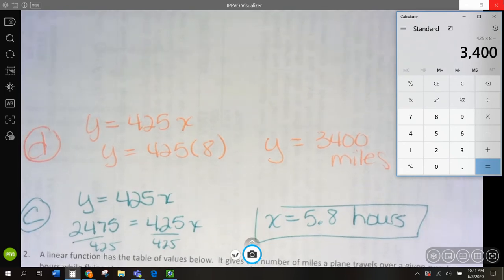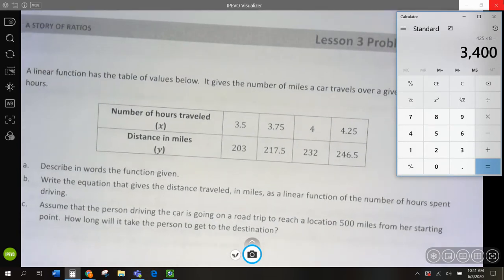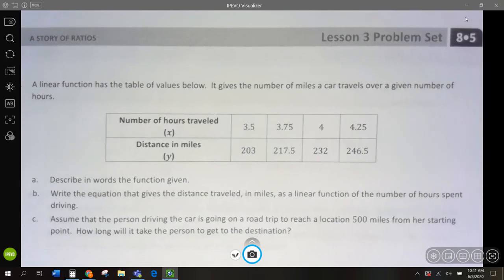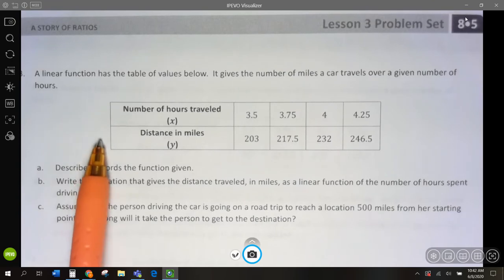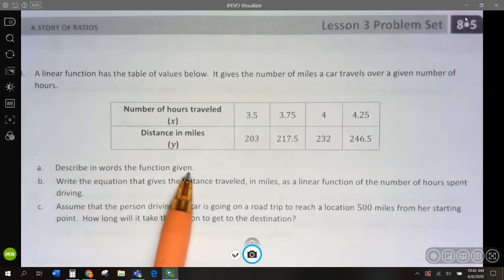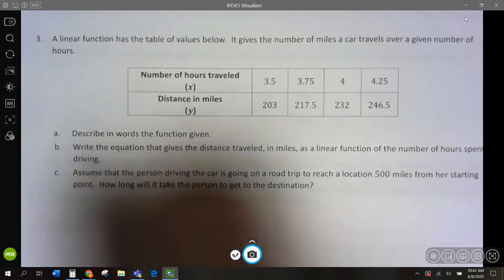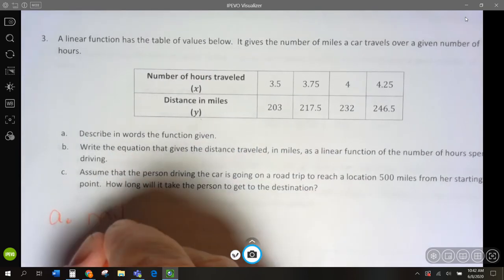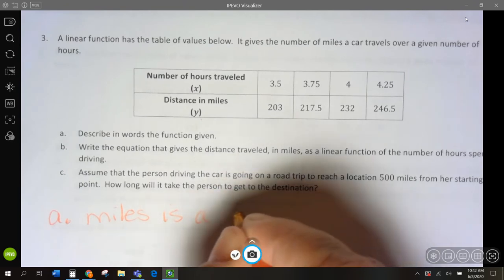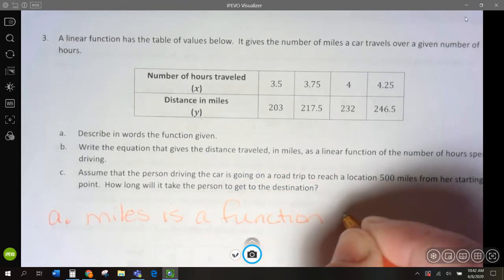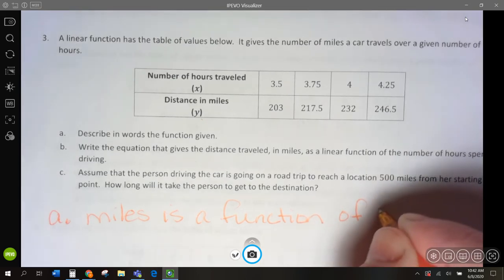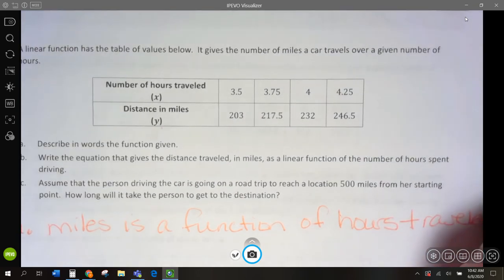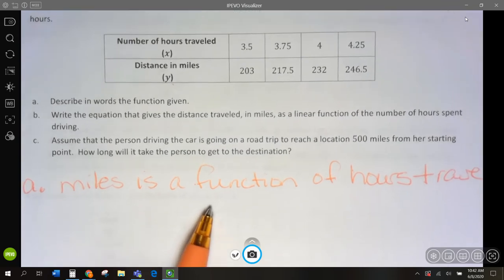Let's go on to number 3. We have a linear function here. It gives the number of miles a car travels over again, number of hours, so they want to know where is the function given. So, let's do a here, our miles is the function of hours. Miles is a function of time or hours traveled. The more hours we travel, the further we'll go.